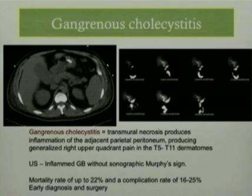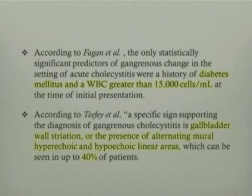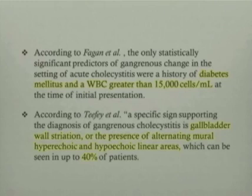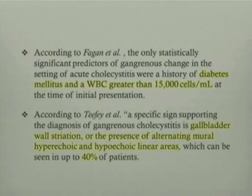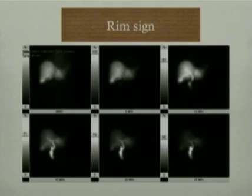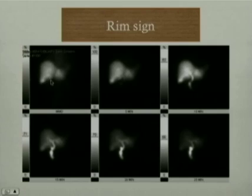Gangrenous cholecystitis has a very high mortality rate of up to 22 percent and a complication rate of 16 to 25 percent, which requires early diagnosis and therefore surgery. According to Fagan et al., the only statistically significant predictors of gangrenous change in the gallbladder in the setting of acute cholecystitis were a history of diabetes mellitus and a white count greater than 15,000. A specific sign supporting the diagnosis is gallbladder wall striation — alternating hypoechoic and hyperechoic linear areas — seen in about 40 percent of patients. The HIDA scan RIM sign shows increased uptake in the liver parenchyma adjacent to the gallbladder without any activity in the gallbladder itself.